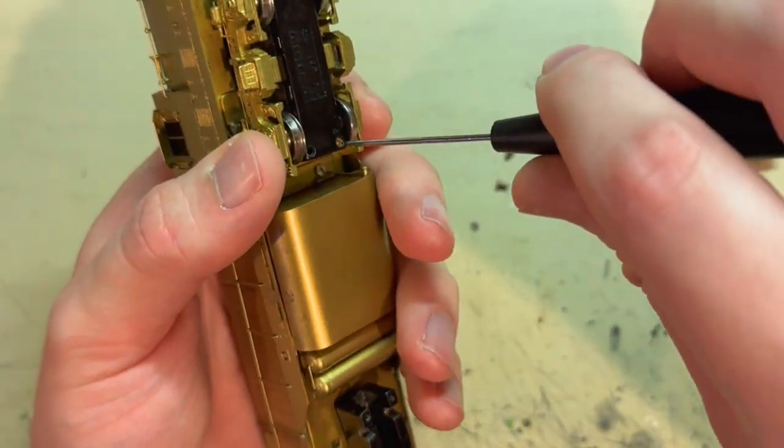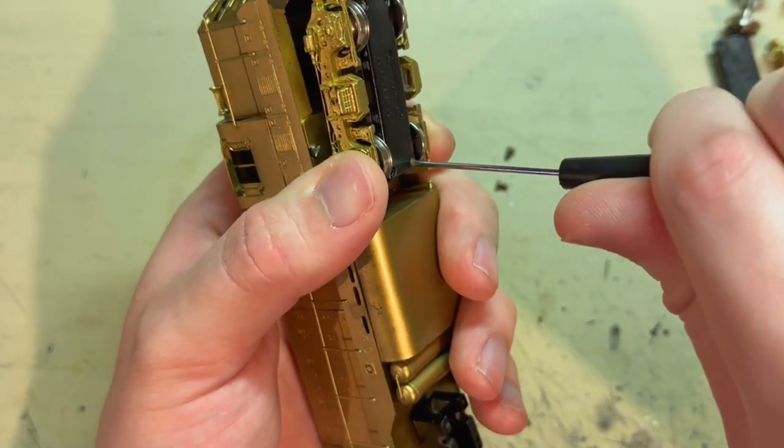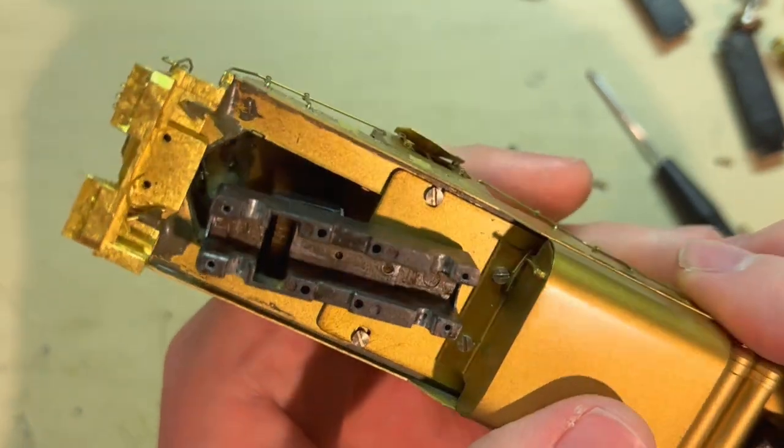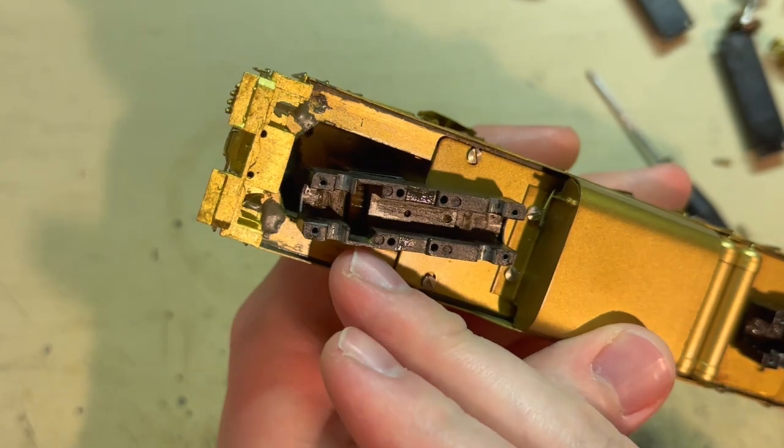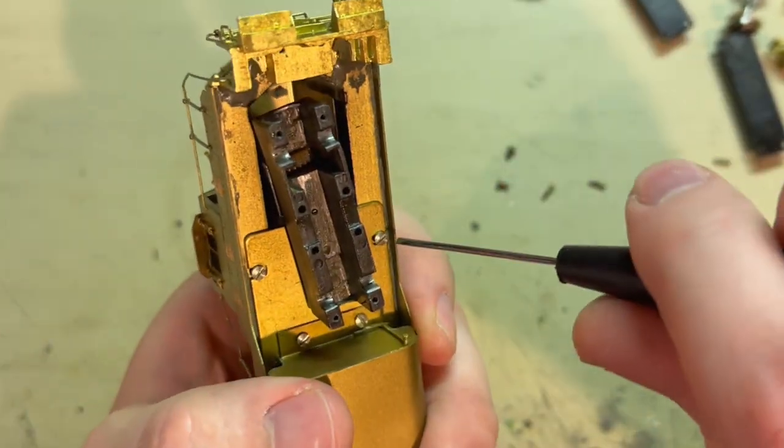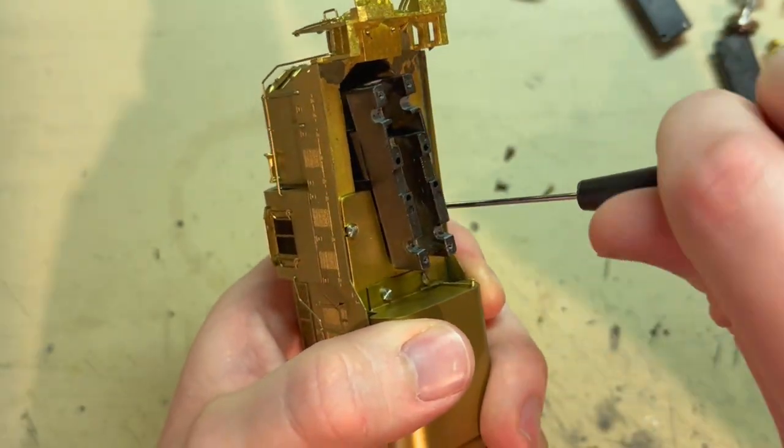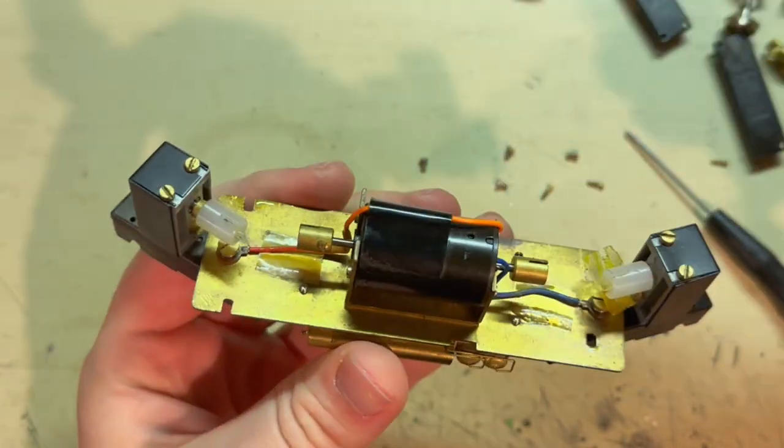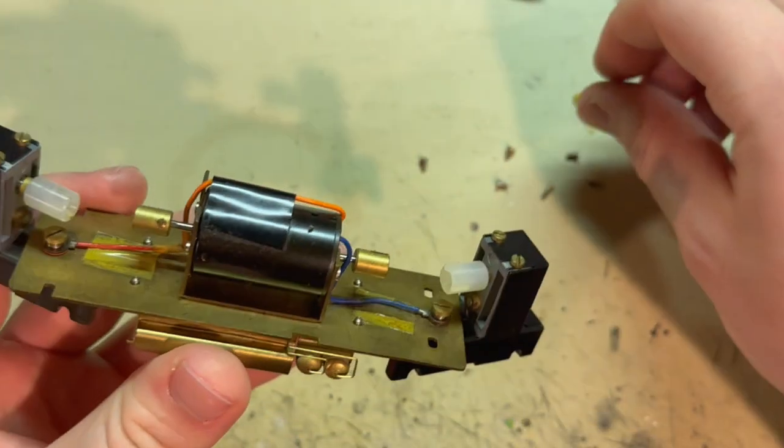And I'll just do the same for the other end, which I'm sure is also missing its worm shaft. It looks like those tower gears are plastic, so maybe this one at some point had a split tower gear on each of those worm shafts. If it did, then that would explain its conversion into a dummy unit. I'll just lift that off. And the universals have also been removed.